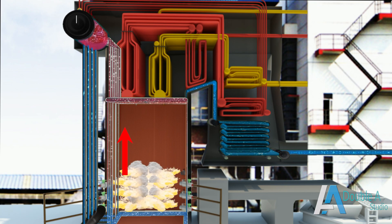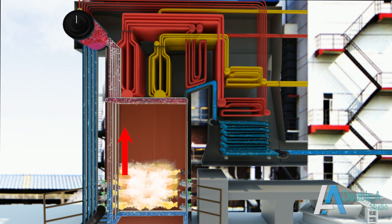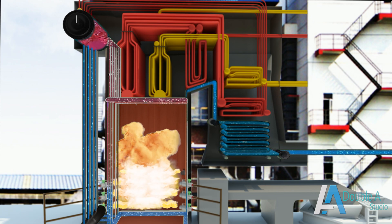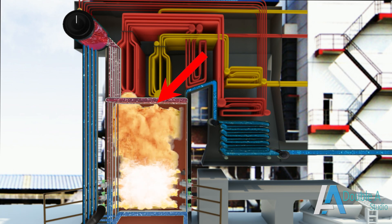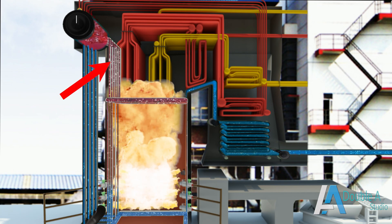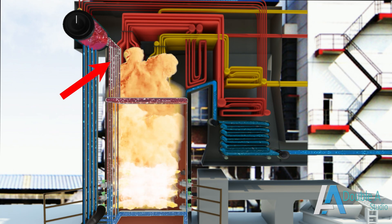This water-steam mixture rises through the water wall tubes and reaches the upper or top ring headers. From here, riser tubes carry water-steam mix to the boiler drum.